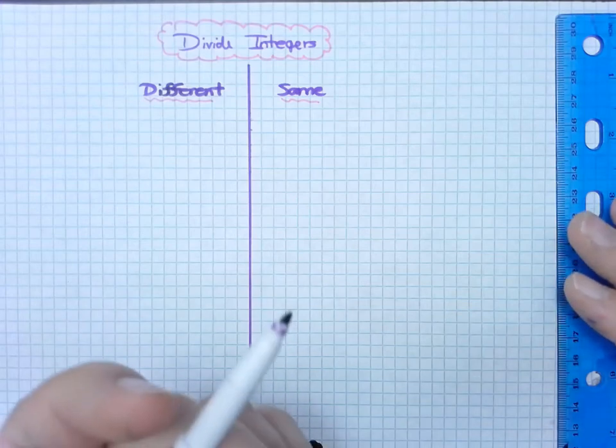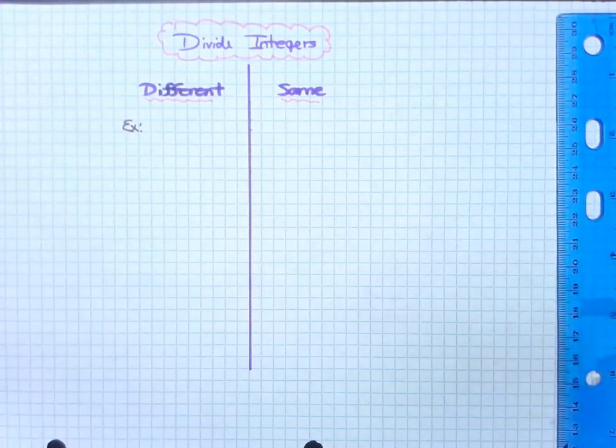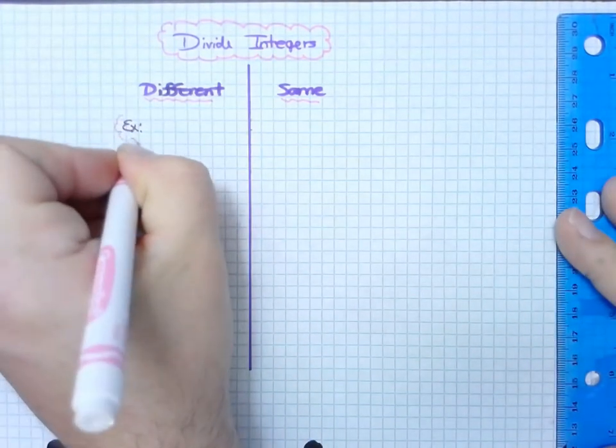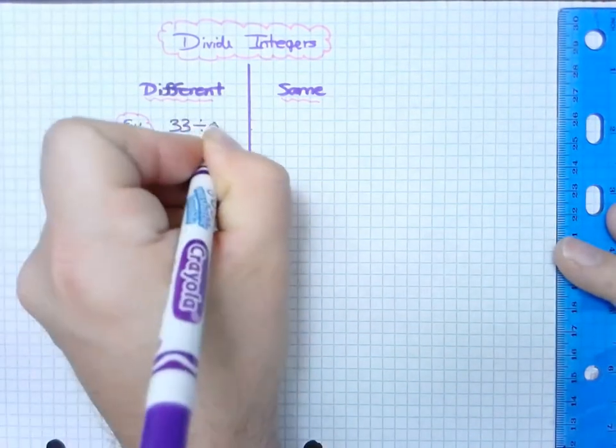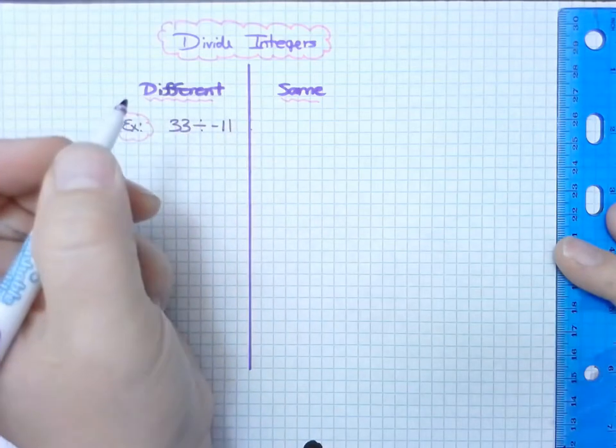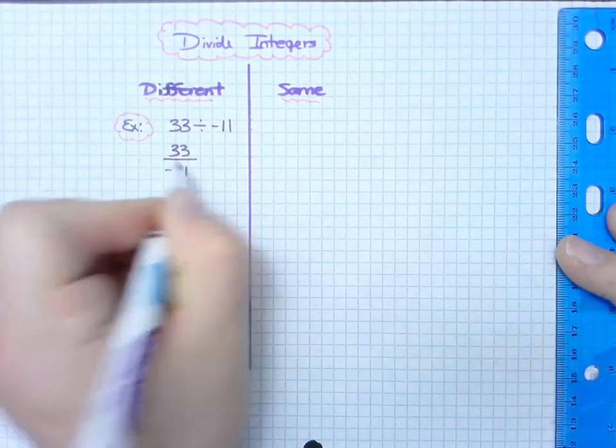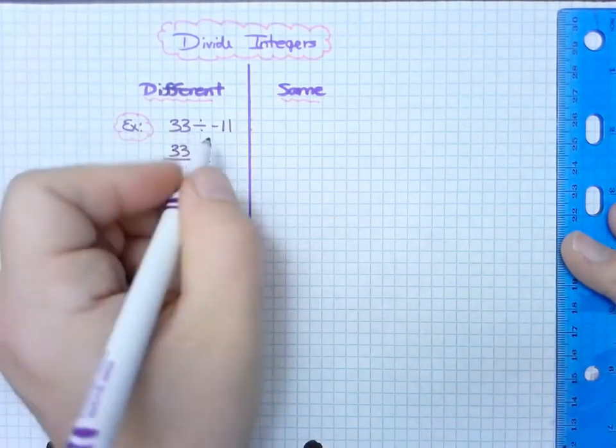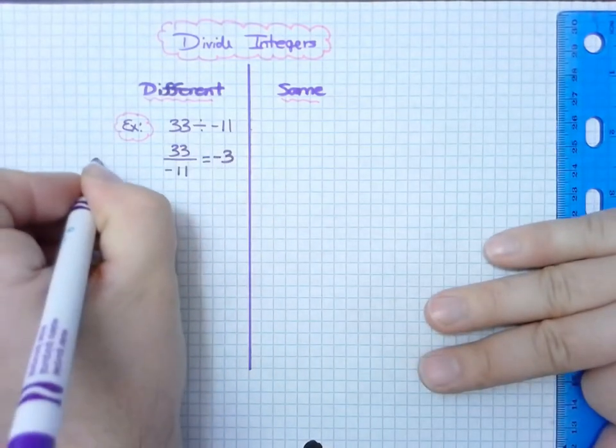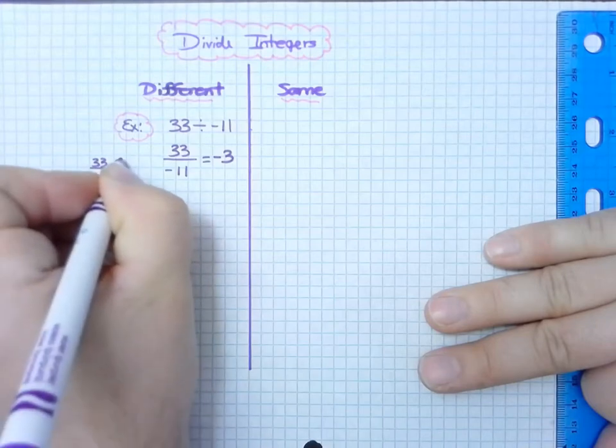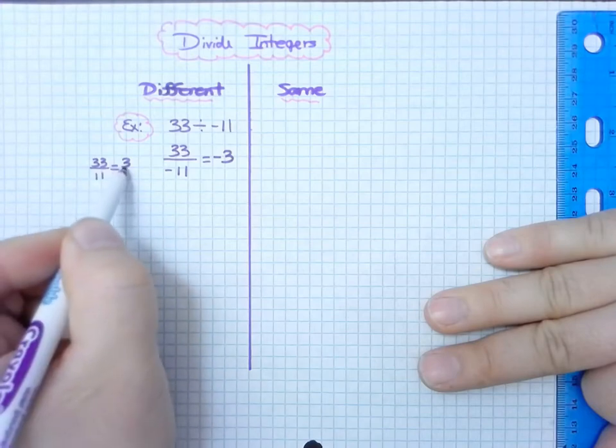So let's take a look at an example. We have 33 divided by negative 11. We could write that as 33 divided by negative 11, and we get negative 3. Just recall that we know 33 divided by 11 is a positive 3, so when we change one of the signs, we have to change the sign of the answer.